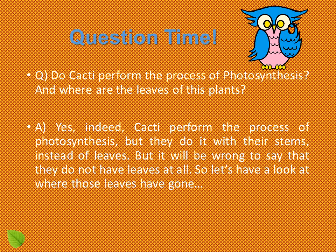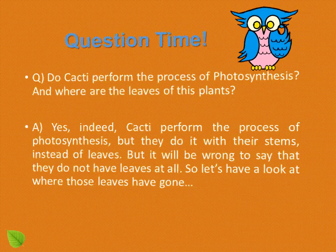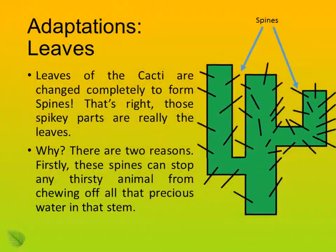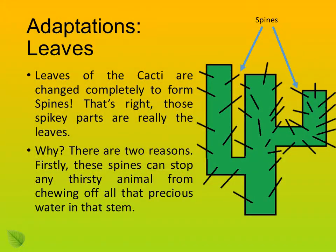But it would be wrong to say that cacti do not have leaves at all. Let's have a look at where those leaves have gone. Adaptation — leaves. The leaves of cacti are changed completely to form spines. That's right — those spiky parts are really the leaves.